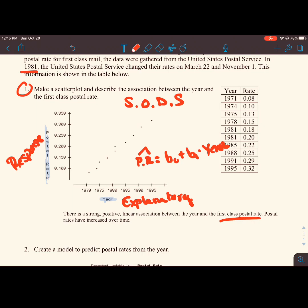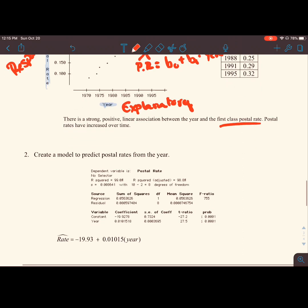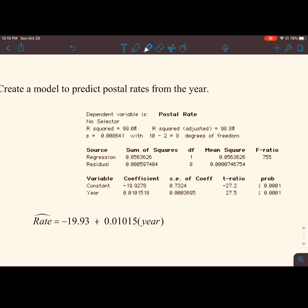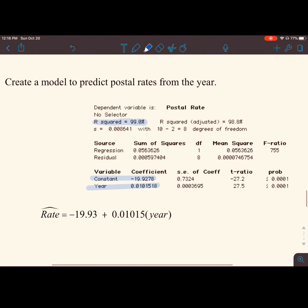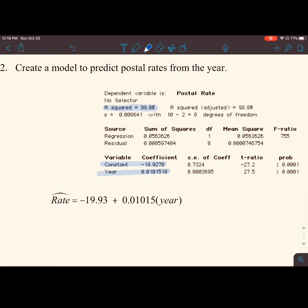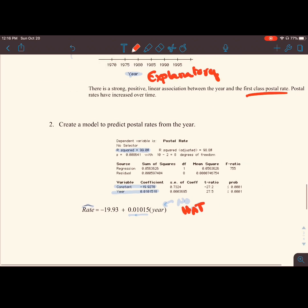Create a model to predict postal rates from the year. As the book often does, this is way more information than we need. We have our constant, which is our y-intercept. We have our year, which is our explanatory variable, so that's our slope. And we should also have our r squared, which is 99%. When we write our slope, our predicted value is the postal rate. We can have rate hat equals negative 19.93 plus 0.01015 times the year. There's no hat on the explanatory variable because we're using that actual value.